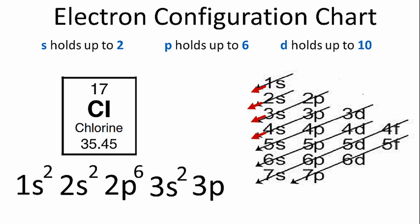p orbitals can hold up to 6, but in this case, we don't need 6. We only need to put 5. That'll give us 17 electrons. 2 plus 2 plus 6 plus 2 plus 5 equals 17, the number of electrons we have for the chlorine atom.